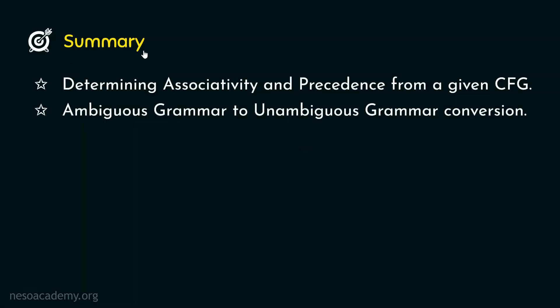In this session, we first learned how to determine the associativity and precedence from a given CFG. Then we converted an ambiguous grammar to its unambiguous version. In the upcoming sessions, we will observe some solved previous-year questions. I hope to see you in the next ones. Thank you all for watching.